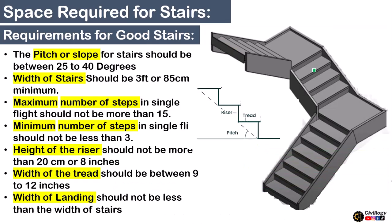First of all, we should know what are the requirements for good stairs. Here are a few points to keep in mind before designing a staircase. First, the pitch or slope for a staircase should be between 25 to 40 degrees. Second, the width of stairs should be 3 feet or 85 centimeters minimum. And the maximum number of steps in a single flight should not be more than 15.